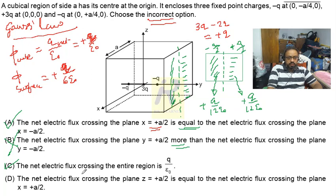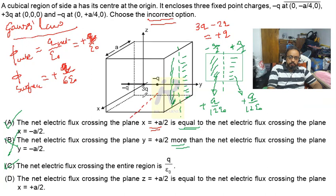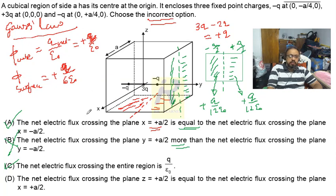Option D says the net electric flux crossing the plane z = +a/2 equals the net electric flux crossing the plane x = +a/2. For any plane corresponding to the x, y, or z axis — taking half on one side and half on the other — the same theory holds: the flux through any such region at +a/2 or -a/2 on any side must remain the same. So option D is also correct. Therefore, only option B is incorrect.